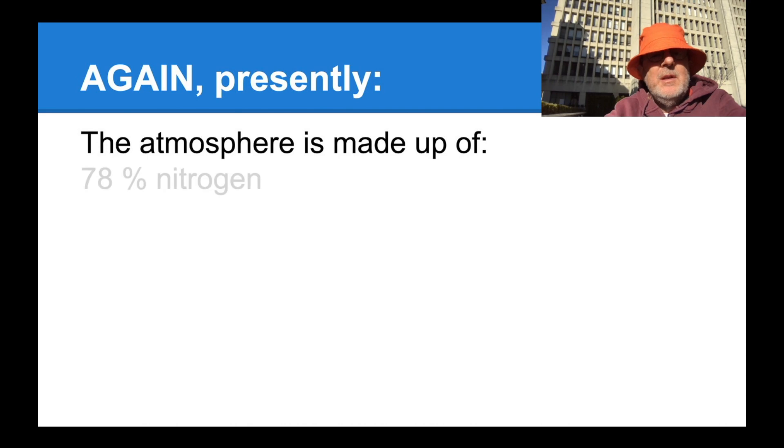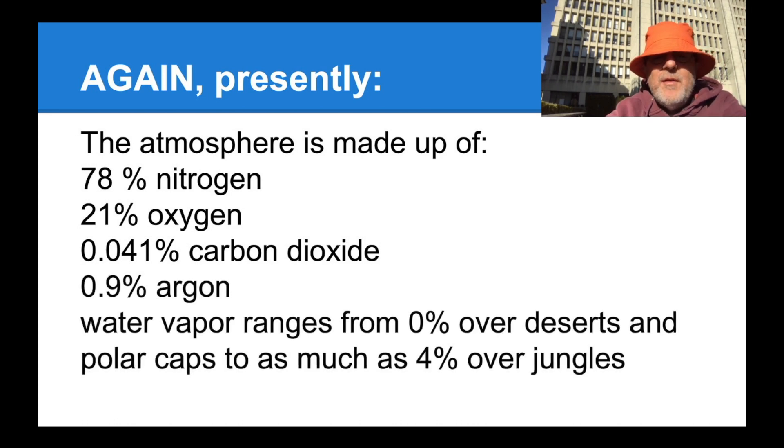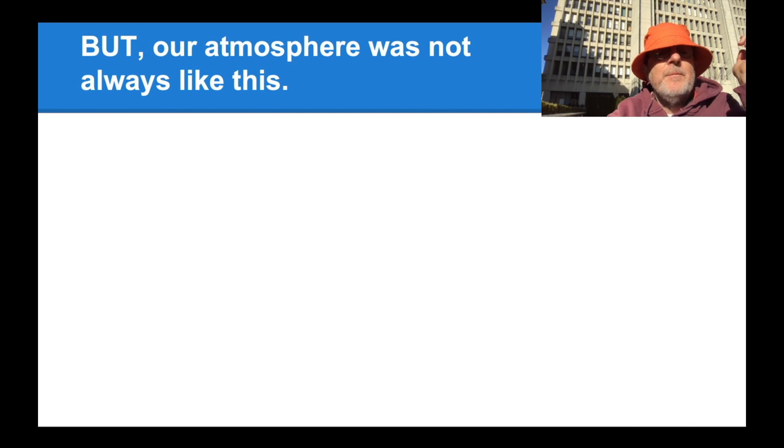Again, presently, the atmosphere is made up of 78% nitrogen, 21% oxygen, 0.41% carbon dioxide, 0.9% argon. Water vapor ranges from 0% over the deserts and polar caps to as much as 4% over jungles. But our atmosphere was not always like this.